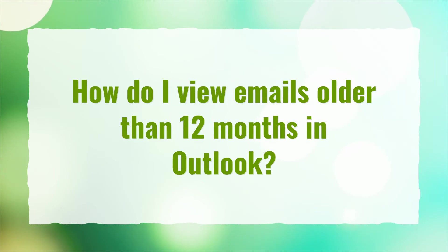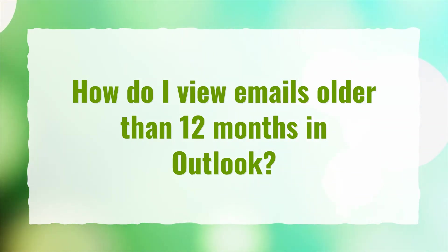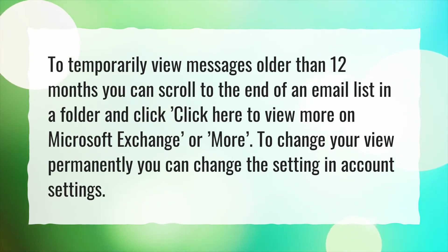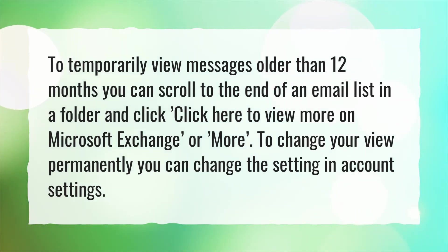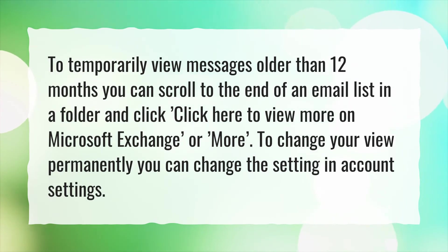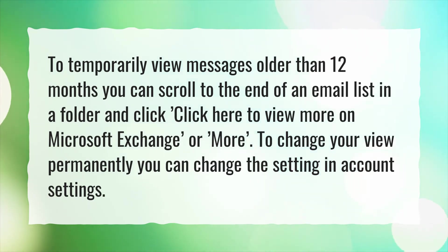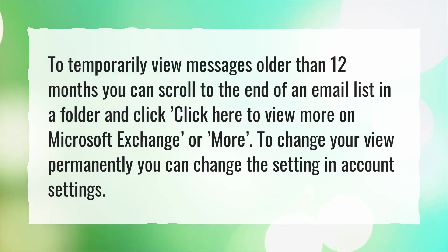How do I view emails older than 12 months in Outlook? To temporarily view messages older than 12 months, you can scroll to the end of an email list in a folder and click 'Click here to view more on Microsoft Exchange.' To change your view permanently, you can change the setting in Account Settings.